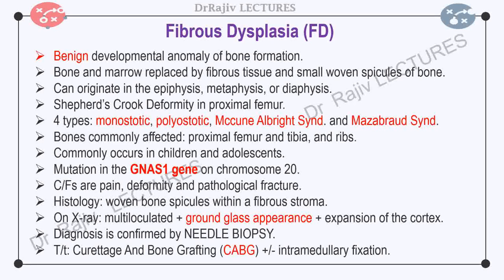The characteristic histopathological appearance is that of woven bone spicules with a fibrous stroma. On radiograph, the lesion is usually multi-loculated with ground glass appearance and expansion of the cortex of the bone. Serum alkaline phosphatase is often raised. Diagnosis is confirmed by needle biopsy. Active treatment is not required so long as the condition is asymptomatic and is an incidental finding. Surgical treatment with curettage and bone grafting with or without intramedullary fixation is indicated when there is significant deformity, impending pathological fracture, acute pathological fracture, or significant pain.